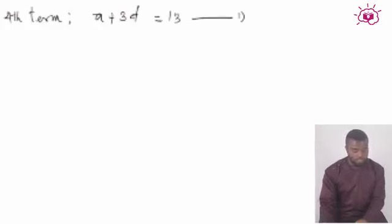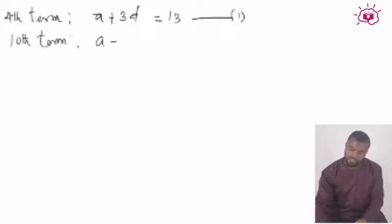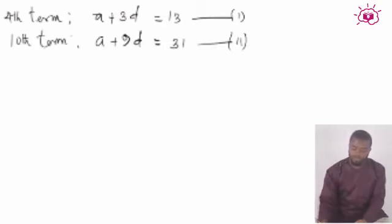We were told that the 10th term - the formula for the 10th term is a plus 9d. We're told that it is 31. So we have two equations. First of all, we need to solve these equations.